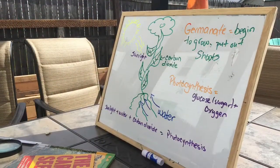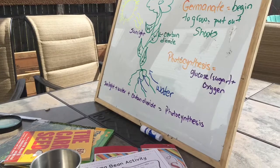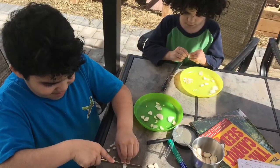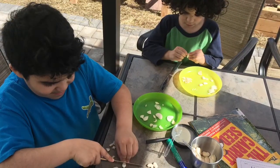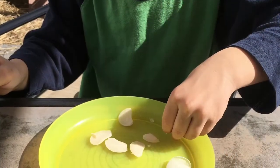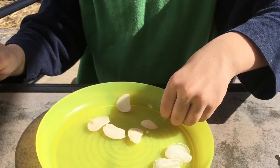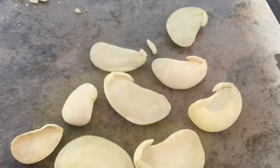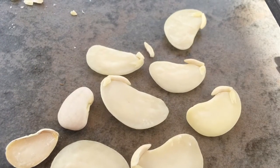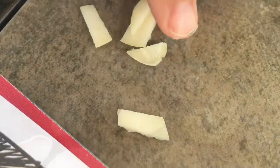The last activity was about photosynthesis, and we also got to observe and dissect a lima bean. We were able to open it up, find the embryo inside, and talk about the difference between a lima bean that has been soaked and one that still has a hard seed coat.